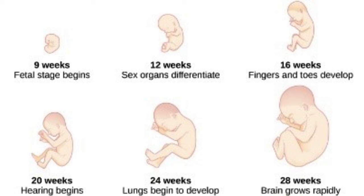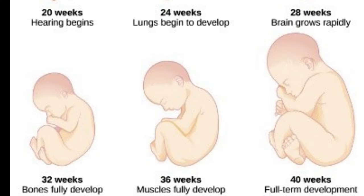Babies become too big to remain in the womb from week 37, the placenta begins to reduce in function, and the amniotic fluid begins to dry up. Most babies are born at 37 to 40 weeks, with a few born after 40 weeks either spontaneously or through induction of labor by doctors.